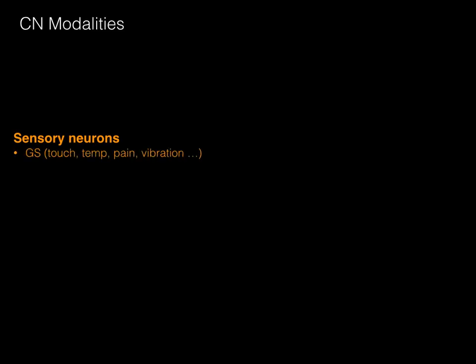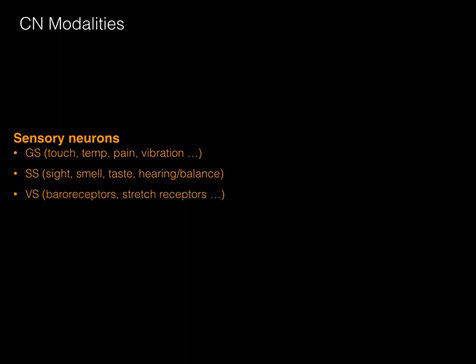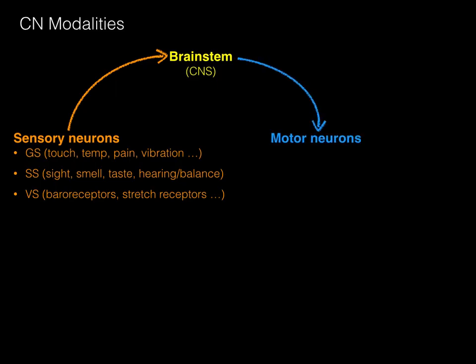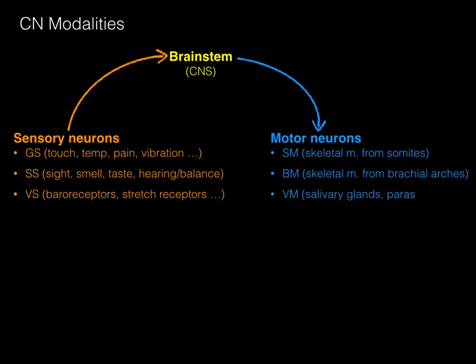So what are the cranial nerve modalities? Sensory neurons have three modalities: general sensory for touch, temperature, pain, and vibration; special sensory for sight, smell, taste, hearing, and balance; and visceral sensory for baroreceptors, stretch receptors, and so forth. These sensory neurons send information to the brainstem for processing, and then motor neurons provide three modalities of output: somatic motor to skeletal muscle derived from somites like tongue or eye muscles; branchial motor to skeletal muscle derived from branchial arches like muscles of facial expression, mastication, or the traps and SCM; and visceral motor for parasympathetic innervation of salivary glands.